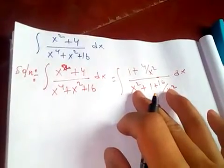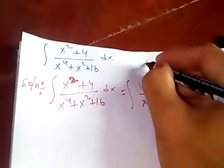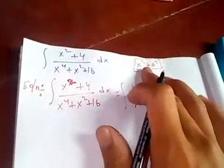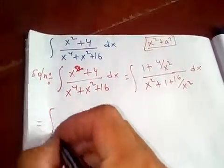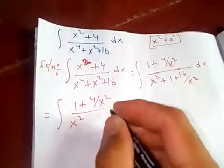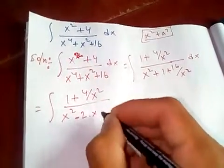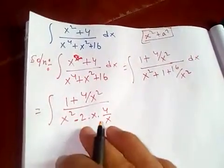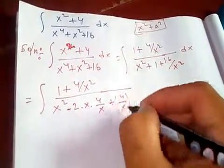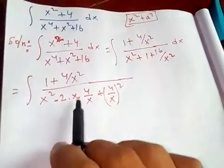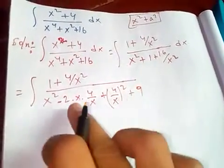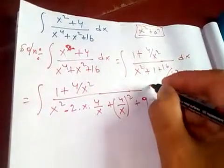Now for the denominator, we want to express it in the form of (x - 4/x)² plus something, so that we can use our special integral. We write: (x - 4/x)² expands to x² - 2·(4/x) + 16/x². Note that (4/x)² = 16/x², and we have minus twice 4/x. To get the constant 1, we need to add 9, since 9 minus 8 equals 1. So the denominator becomes (x - 4/x)² + 9.